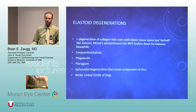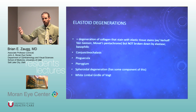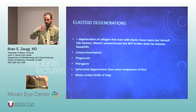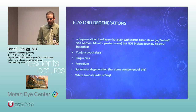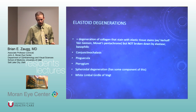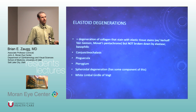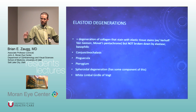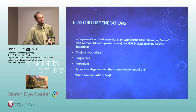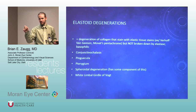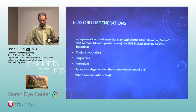Degenerations: if something was normal and is degenerating over time, think about pinguecula and pterygium as the most common. You can also get spheroidal degeneration and limbal girdles at the edge of the corneas. Band keratopathy is also a degeneration — you'll see it at 3 and 9 o'clock with just a little whitening of the cornea. Conjunctival chalasis is something we see very commonly.